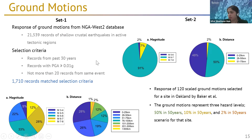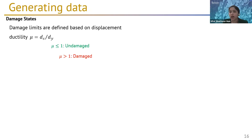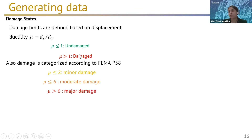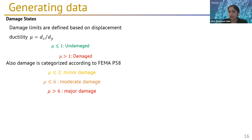With the ground motions selected, the next thing was to define damage. For this study, we looked at displacement ductility: if less than yield displacement, it's undamaged; if greater, it's damaged. For damage classification, we used the FEMA P58 criteria — ductility less than 2 is minor, 2 to 6 is moderate, and greater than 6 is major damage.